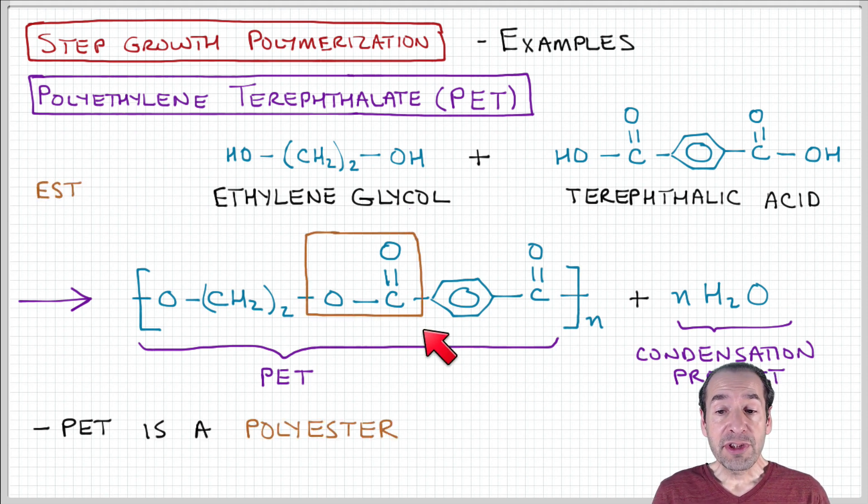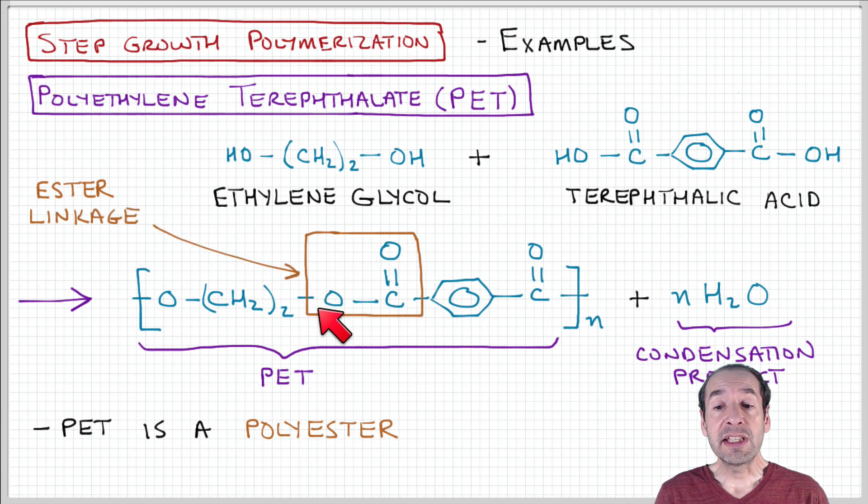So the other thing we can note is that the nature of the linkage in the repeat unit is an ester functional group. So therefore PET is an example of a polyester structure. So I think we've all heard of polyesters or sometimes use that term in terms of clothing to refer to the fibers that make up the synthetic material that the fabric is produced from. And that refers to the nature of the linkage that's present in the monomer units or when the monomer units join to form the repeat unit of the polymer.